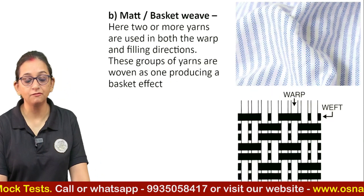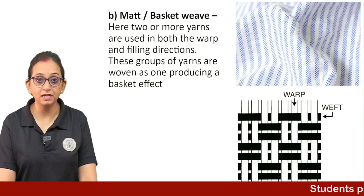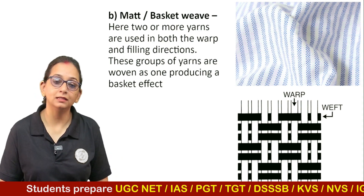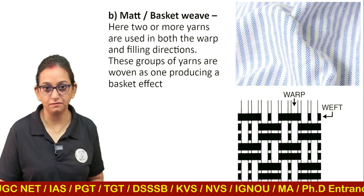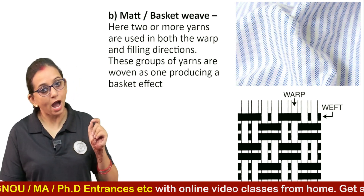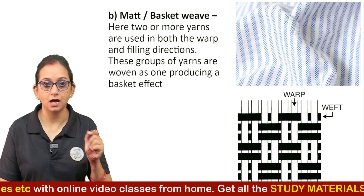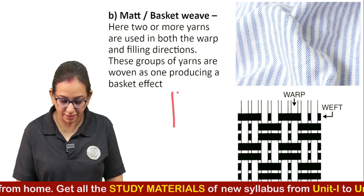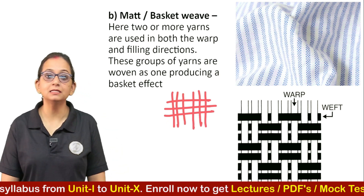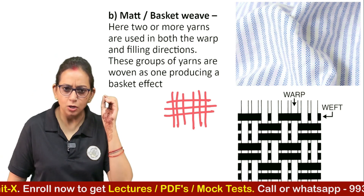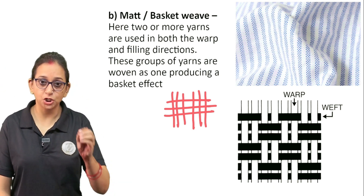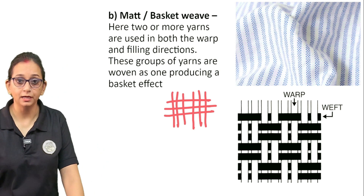The second form of a plain weave is the mat weave or basket weave. Just like the way a basket is made, it is woven by the same method. Two or more yarns are used as the warp yarns and two or more yarns are used as the weft or filling yarns, producing an effect which gives the form of a basket weave.